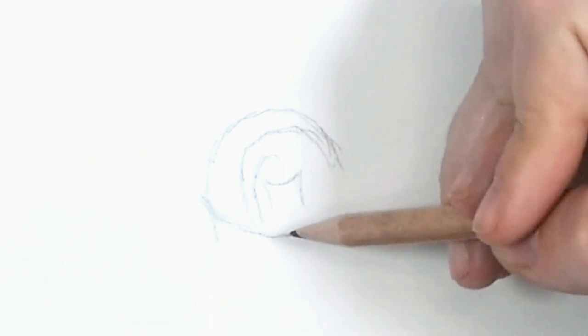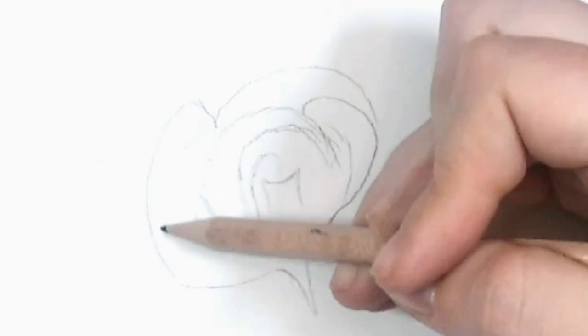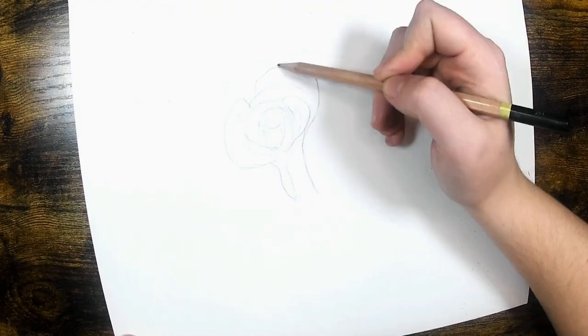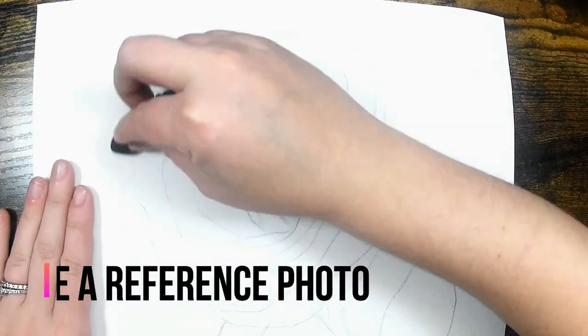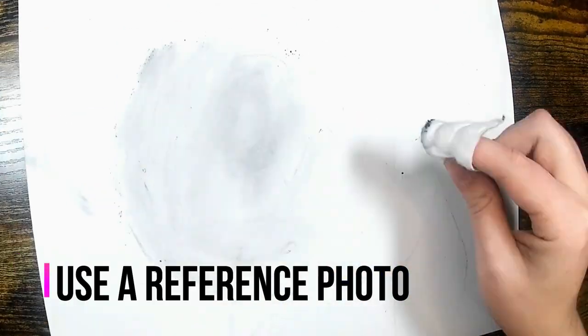You can then start drawing the petals around the center and the stem and leaves. My next tip is to use a reference photo.